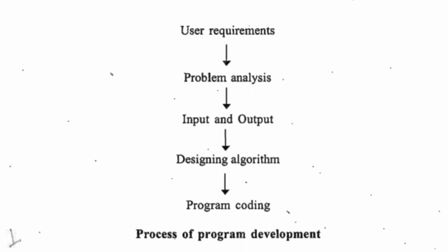For solving the problem, an algorithm is implemented. An algorithm is a sequence of steps that is a method of solving a problem. This algorithm creates the logic of the program, and on the basis of this algorithm, program code is written. The steps before writing program code are as shown: first we need user requirements, then problem analysis, input and output, designing the algorithm, and finally program coding.